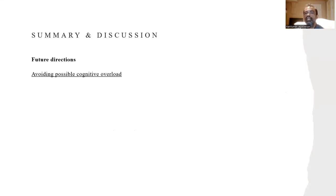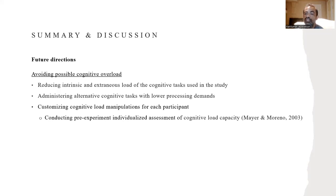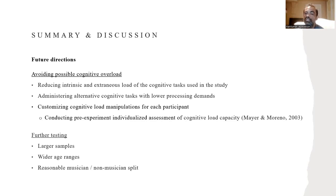For future directions, we mainly suggest avoiding possible cognitive overload effects using easier tasks and clearer instructions to reduce intrinsic and extraneous load. Given that this is a within-subjects paradigm, customizing cognitive load manipulations for each participant would be ideal, and literature recommends pre-experiment assessment of cognitive load capacity for each participant. Further testing with larger samples will better inform the findings, and wider age ranges will facilitate analysis of age effects. Lastly, the musician/non-musician split in our sample was lopsided — four musicians out of 24 participants — rendering any analysis of musical training ineffective. We suggest testing a better balanced sample for the effect of musical training on spontaneous intrapersonal synchronization.